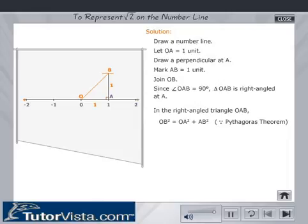OB squared equals OA squared plus AB squared by Pythagoras theorem. Therefore, OB squared equals 2. Therefore,